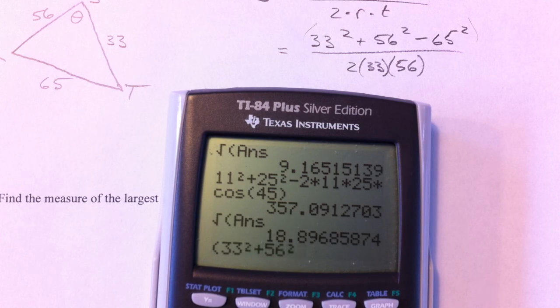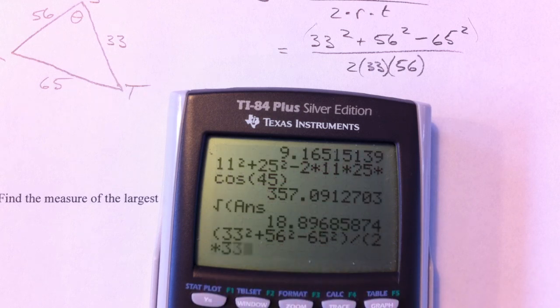So top is in parentheses because I want to add and subtract the top first. And then the bottom is in parentheses because I want to make sure those are all multiplied together before I divide.